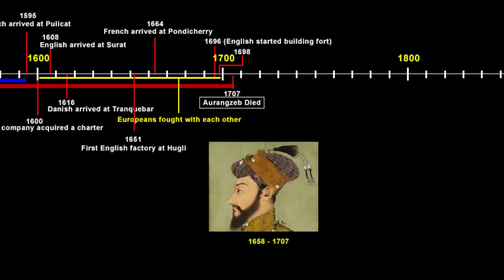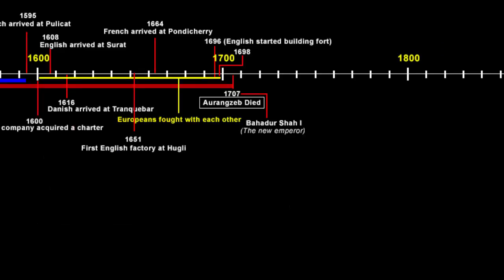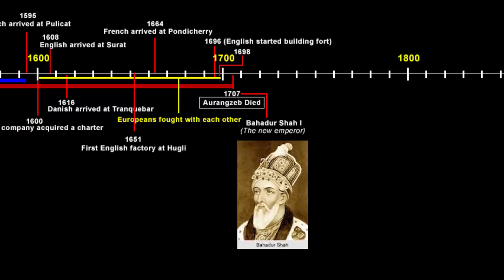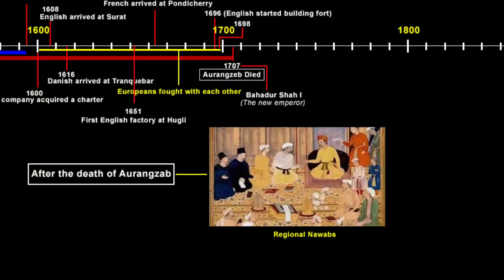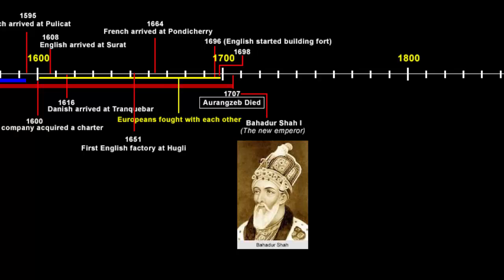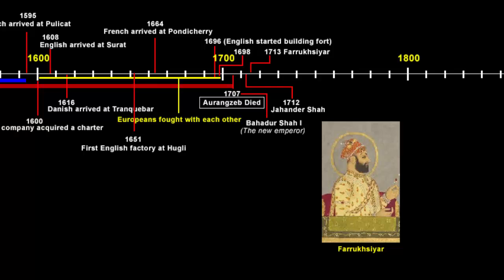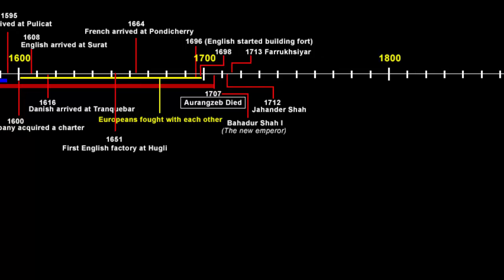Aurangzeb's death is an important milestone because from here, the situation changed drastically. Aurangzeb was the last powerful Mughal emperor. After his death, Bahadur Shah I was the next Mughal emperor, but he was not that powerful. The reason we can draw that conclusion is that after Aurangzeb's death, all the regional Nawabs wanted to execute their own power and authority in their respective regions. This clearly tells us that Bahadur Shah I was not as influential as Aurangzeb. After Bahadur Shah I, his son Jahandar Shah, and after him, Farrukhsiyar became the emperor.